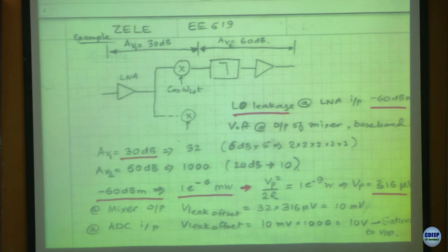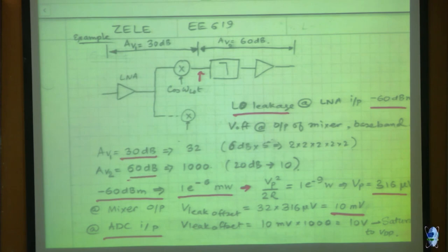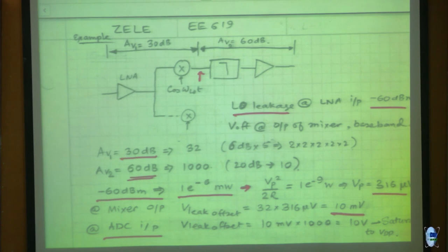With 30 dB gain - 6 dB is a factor of 2, so 30 dB is a factor of 32 - 32 multiplied by 316 microvolts gives about 10 millivolts at the mixer output. At the ADC input you have 60 dB gain, which is a factor of 1000. So 10 millivolts gets multiplied by 1000, giving 10 volts at the ADC input - it will be railed out to supply or ground. This is the problem with 0IF: DC offsets saturate the entire receiver.